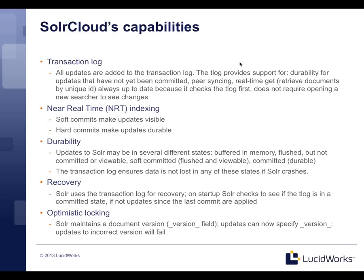We also have optimistic locking. Solr automatically maintains document versioning via a special field called _version_. An automatic version number is generated, and you have control at update time whether to always update or reject an update if the incoming version is older than what's indexed. You have several modes of control over versioning and locking.